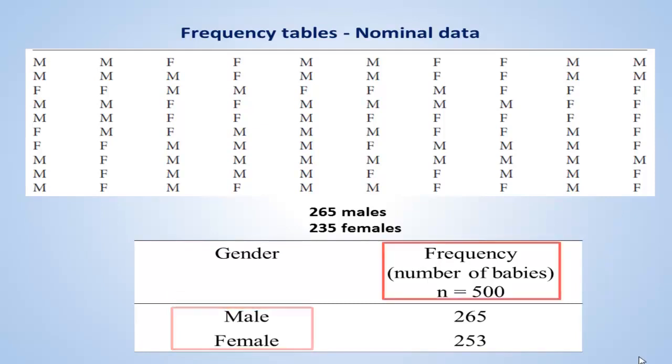The second right-hand side column is frequency column. Frequency is another word for count, and in this example, lists the number of babies in each category, that is, males and females.